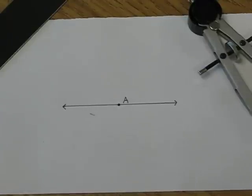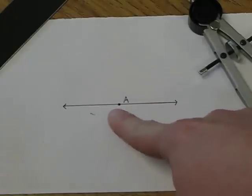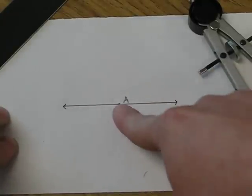Okay, in this construction, we're going to construct a perpendicular line to a point on a line. So here I have a line and a point on the line.